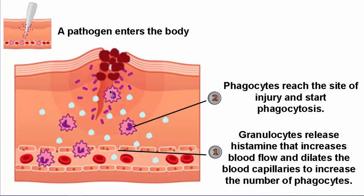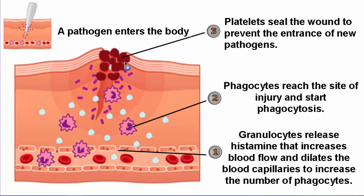Finally, when the phagocytes have cleaned the area, the platelets — the last component of the blood we learned about — come and seal the wound. They cover the wound to stop the entrance of new pathogens. If we cut our finger, after a few days there is a layer on the wound, due to the accumulation of platelets.